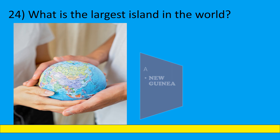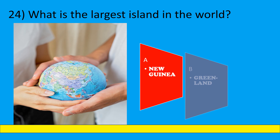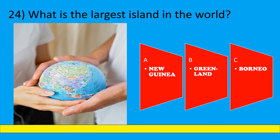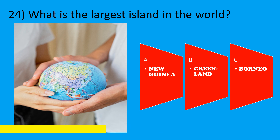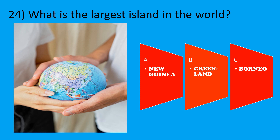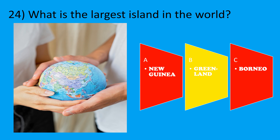What is the largest island in the world? A: New Guinea, B: Greenland, C: Borneo. The correct option is B, Greenland.